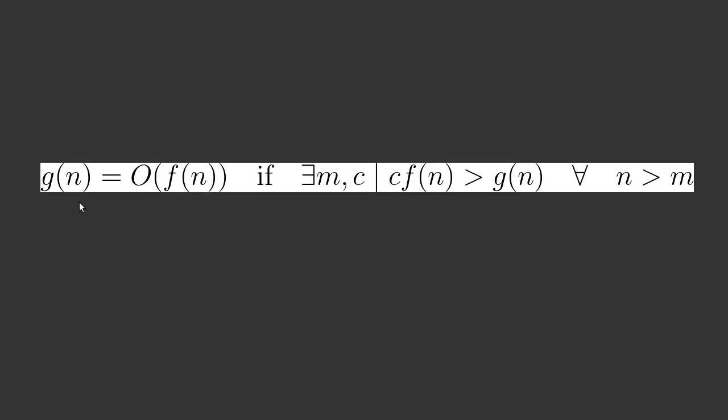We say that that is of order f of n if there exists some values m and c such that c times f of n is greater than g of n for all n greater than m. What does that really mean? That means there's some point m and some constant c where this function multiplied by some constant is always bigger than the amount of work that the program is doing.